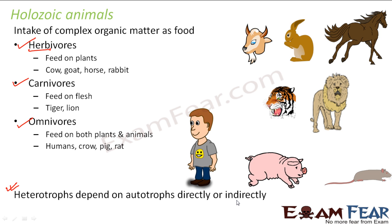If there are no plants, there will be no goat because a goat cannot survive without plants. And if there are no goats, carnivores like lions cannot survive. So a lion is also dependent on plants, but indirectly. We can therefore say that heterotrophs will always depend on autotrophs, either directly or indirectly.